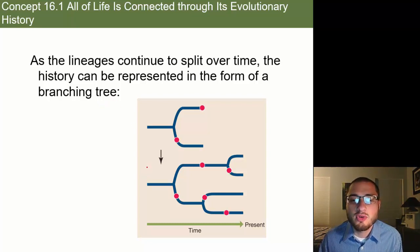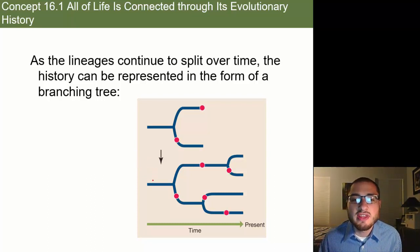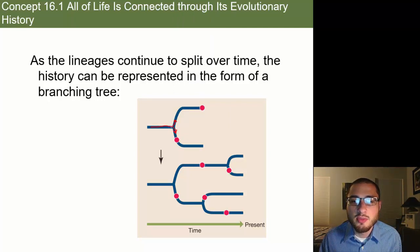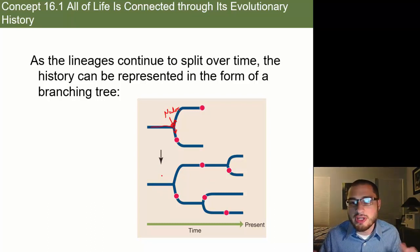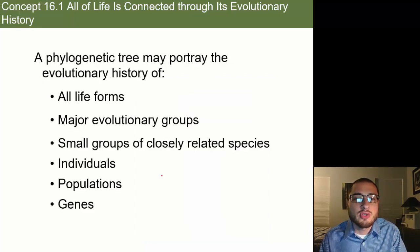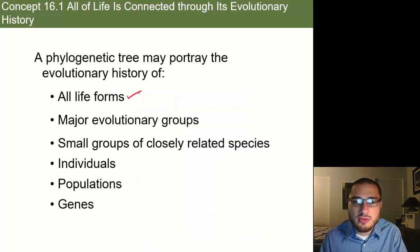As lineages continue to split over time, the history can be represented in the form of a branching tree. That's why we call them phylogenetic trees or evolutionary trees — because they have these branches. It starts out very simple as a lineage, then splits off into different lineages at those nodes, until you create all these different branches and really see how it becomes a tree — a diagram that we call a tree.